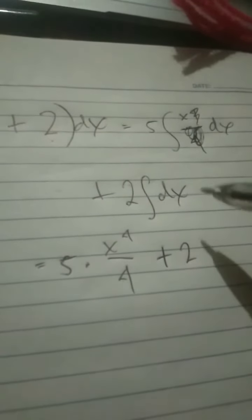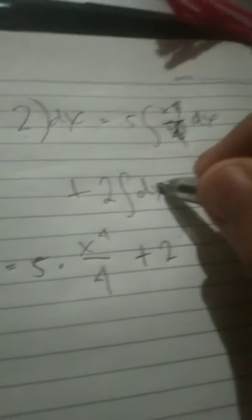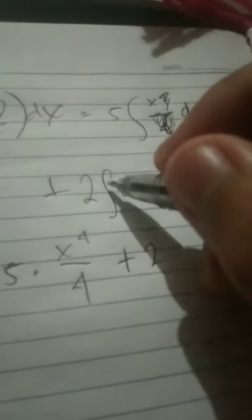Since there's no derivative, we just add the constant which becomes 2x. So after simplifying, we have 5 times x raised to 4 over 4 plus 2x.